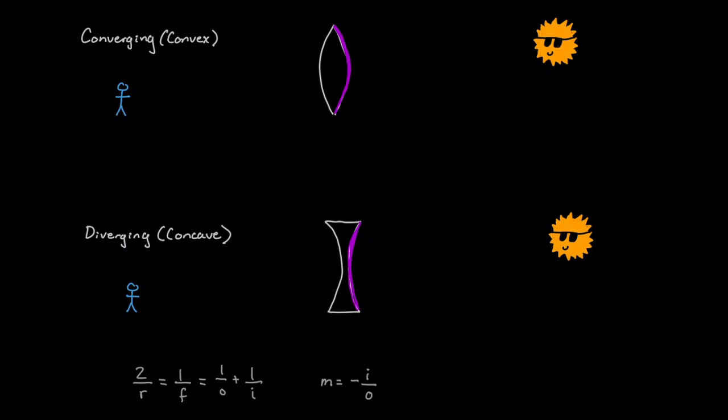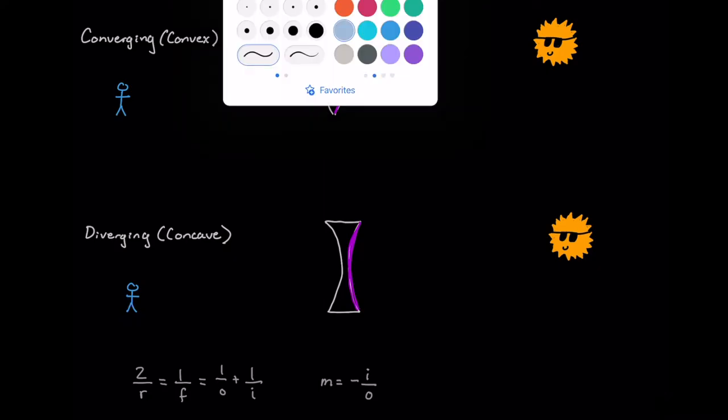So the first sign convention that we want to learn has to do with the difference between the converging and diverging thin lens. So over here we've got our light source, and over here this is our observer or us, and we're going to have light coming in from our light source on this side.